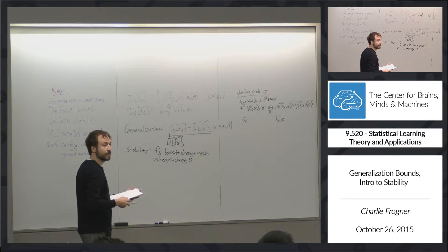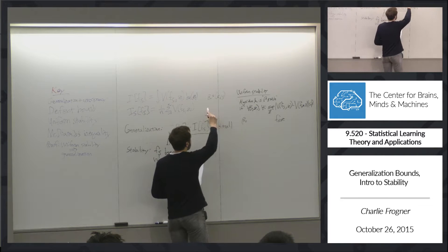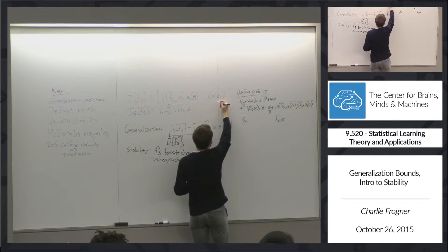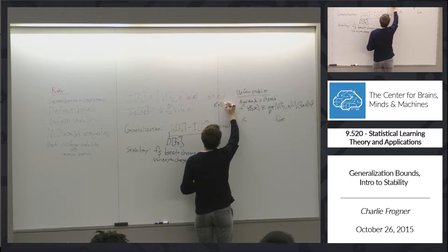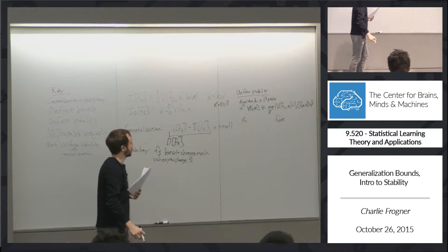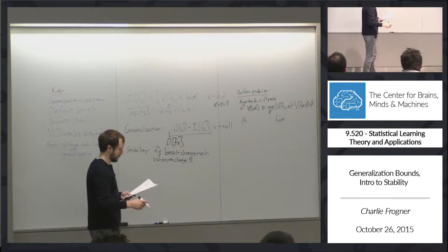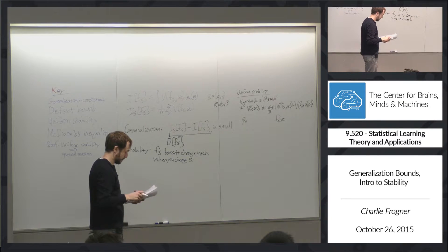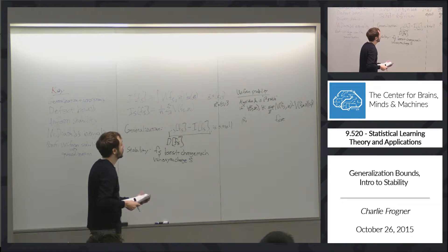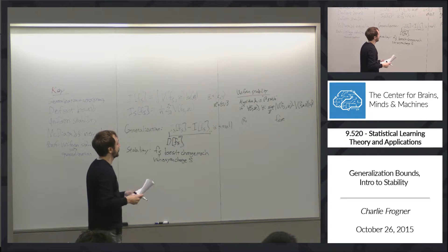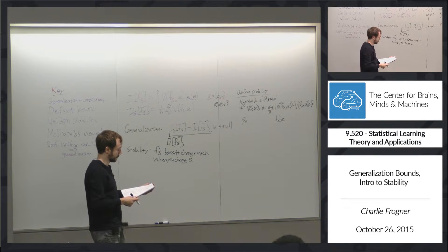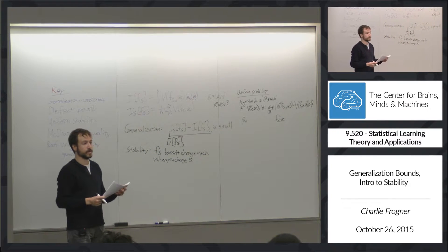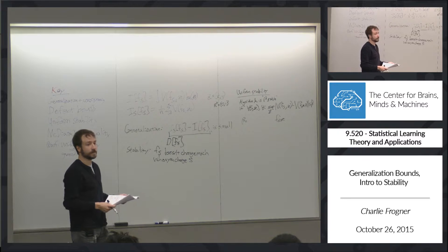So to be concrete: Z is a pair in R^d cross {0,1}, for example. We're going to show that uniform stability is sufficient for generalization of the learning algorithm. And next time on Wednesday, we're going to show that uniform stability is actually a property of Tikhonov regularization — this is a way to show that Tikhonov actually generalizes.